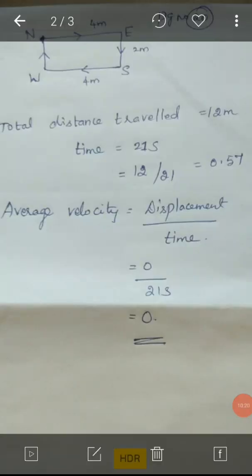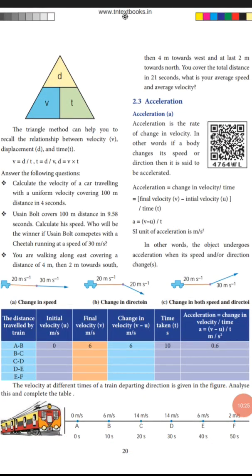Next, acceleration (a). Acceleration is the rate of change in velocity. Acceleration equals change in velocity divided by time: A equals final velocity (V) minus initial velocity (U) divided by time (T). The SI unit of acceleration is meter per second squared.